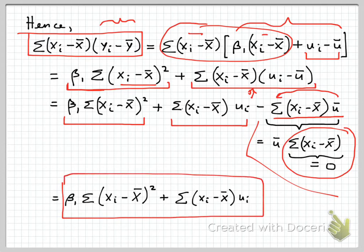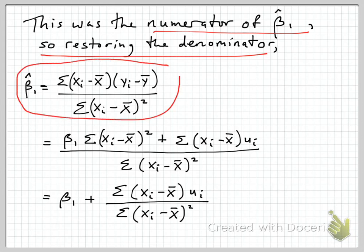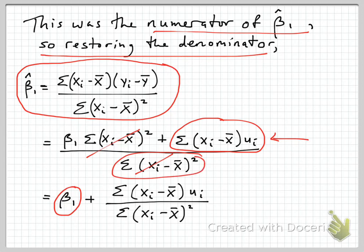This algebraic manipulation shows that the numerator of our slope formula can be re-expressed as beta 1 times the sum of (xi minus x bar) squared, plus the sum of (xi minus x bar) times ui — a function of the error term.